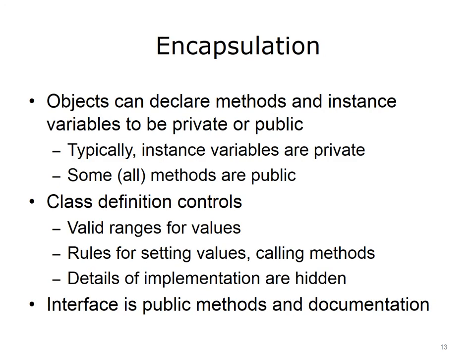Encapsulation builds on modularity to provide what is called information hiding. Objects can specify whether instance variables and methods are public or private. If they are private, they cannot be accessed directly outside of the class. Typically, instance variables are private, and some or all methods are public. When an instance variable is private, it cannot be accessed from outside the class, which prevents other code from changing its value. Instead, the class will provide public methods that can change or retrieve the value of the instance variable. These public methods control what valid values are for the instance variables and when the methods can be called.